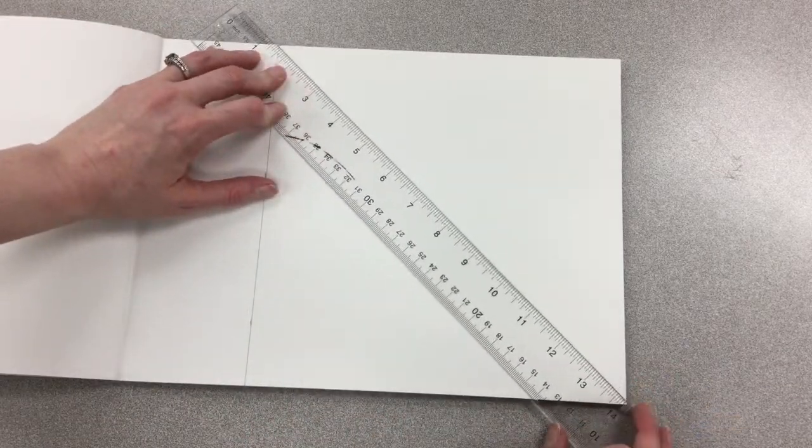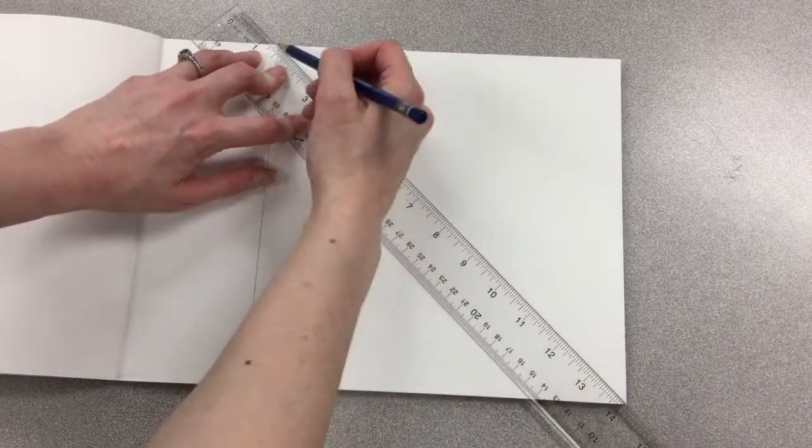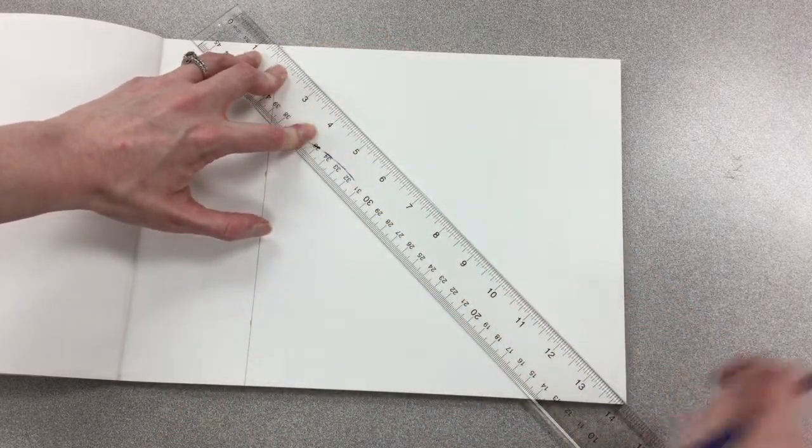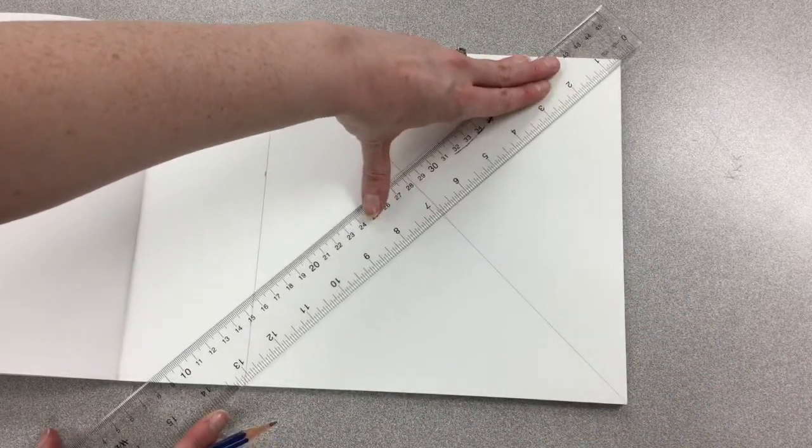I need to find the center of this square, and the fastest way to do that is to draw an X from corner to corner across the box that I just made.